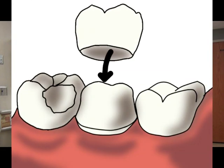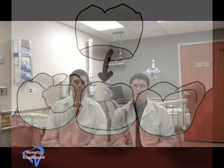Many people are familiar with dental crowns, also known as caps, and many of you may have one or two in your own mouth. A crown covers a tooth 360 degrees and is made out of metal, porcelain, or a combination of the two.